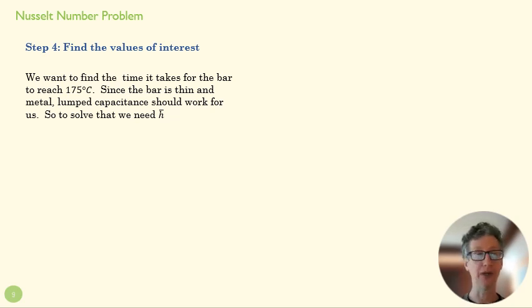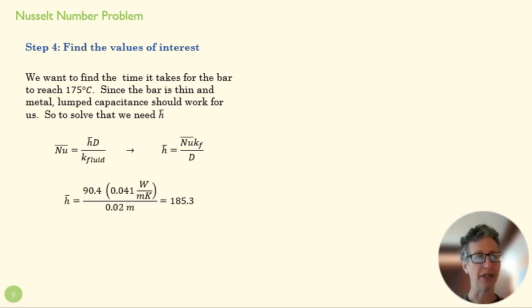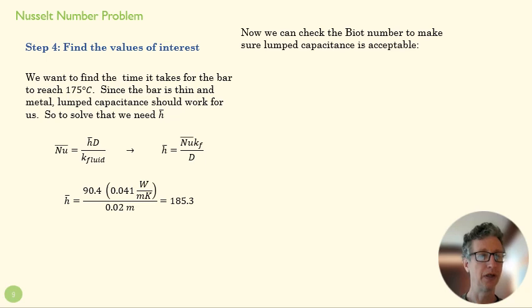To do that, we need H, and H bar, the average H over time. So we use our Nusselt, rearrange the Nusselt number equation to find H bar. And we throw our numbers in there and get a convection coefficient of 185. Now, since this is lumped capacitance, we should double check that this works, that our Biot number is under 0.1. And so we throw our Biot equation out there.